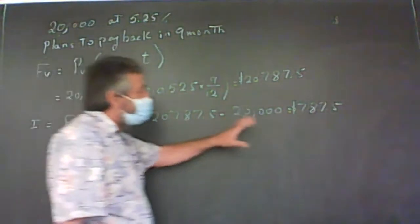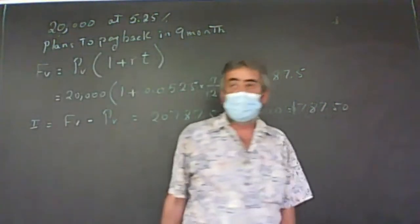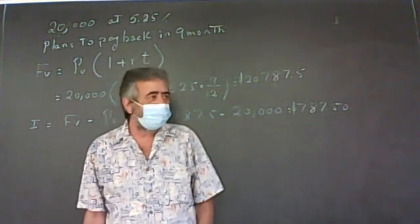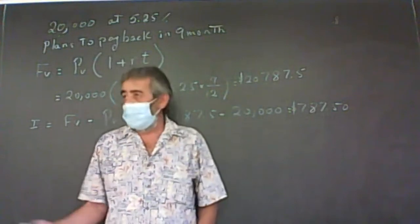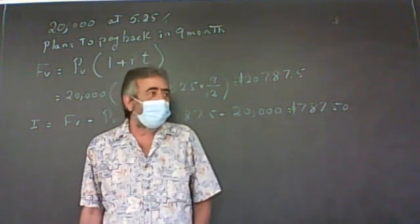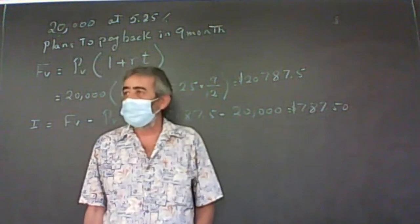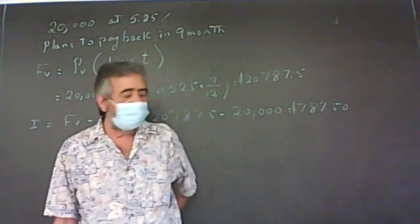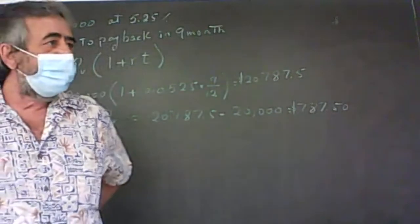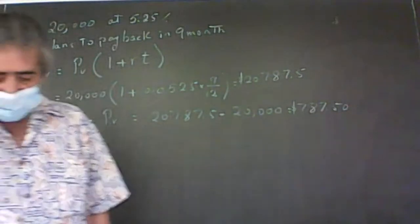Anytime you're working with these types of problems, always make sure to round your answer to two decimal places at the end, because we're talking about money. If you're working with MyMathLab and you don't round to two decimal places, it's going to tell you it's wrong.